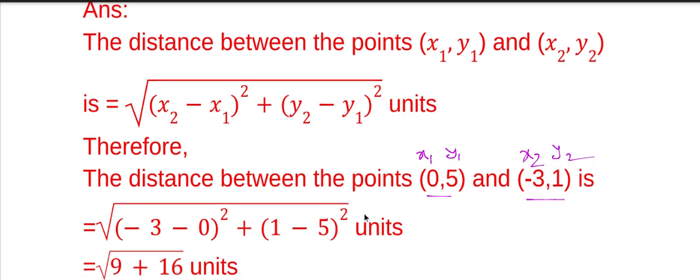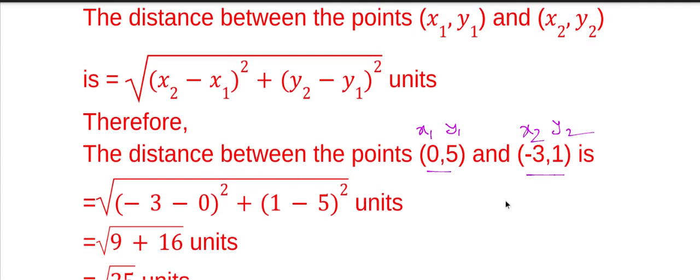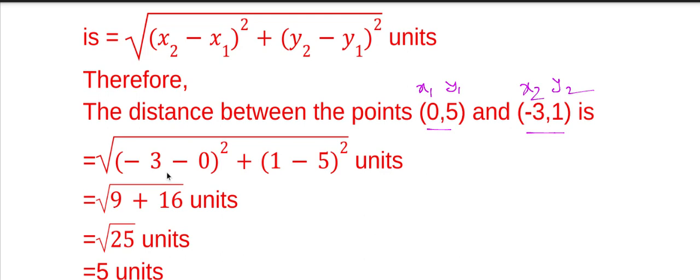Therefore, the distance between these two points is square root of (-3 - 0)² + (1 - 5)² units. Simplifying: -3 - 0 is -3, and (-3)² is equal to 9.